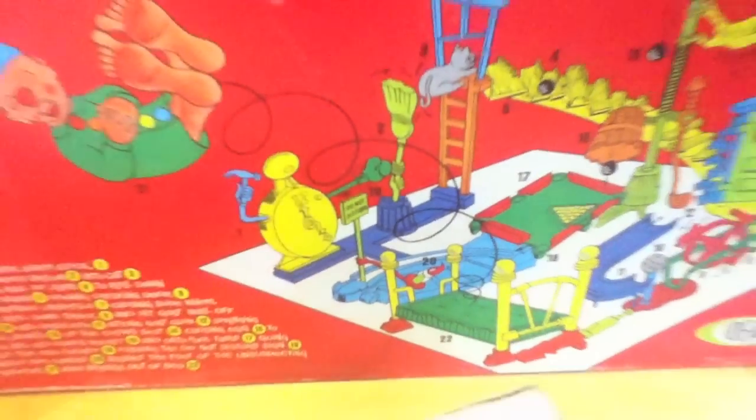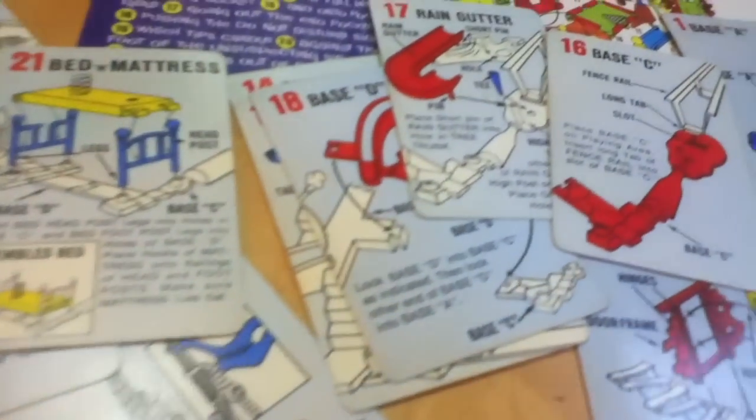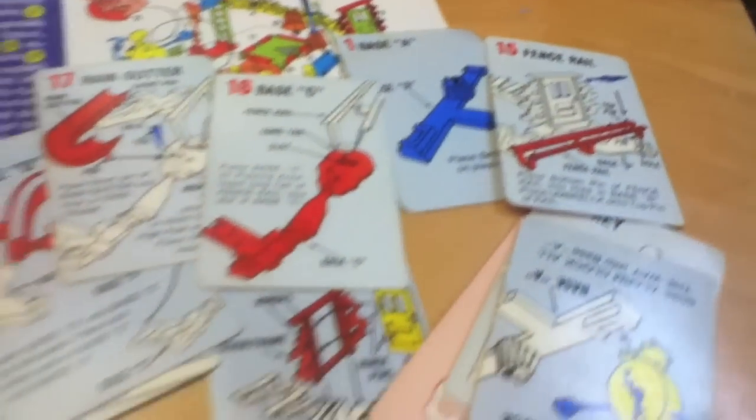This time, you build the contraption, and this little dude gets sprung out of bed. It's his alarm clock. There's a card for every one of those complicated little pieces to assemble this game.